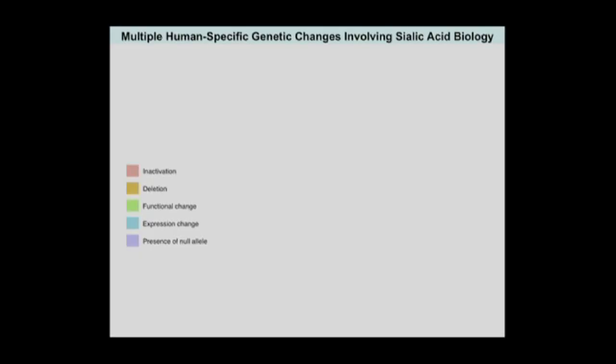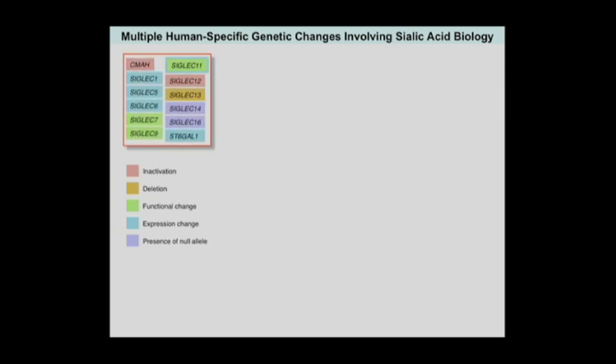Over the years we have discovered multiple human-specific changes involving sialic acid biology. These range from every kind of gene modification — gene inactivations, gene deletions, functional changes, expression changes, presence of null alleles, and so on. Our published list to date is about 12 genes, and actually the total list now is about 15.